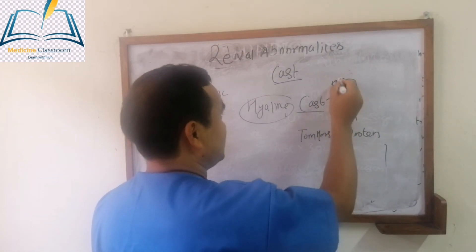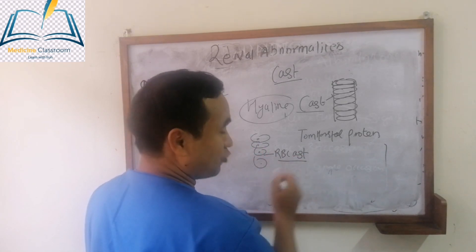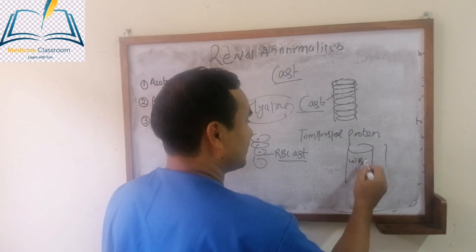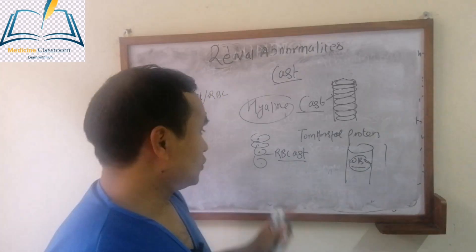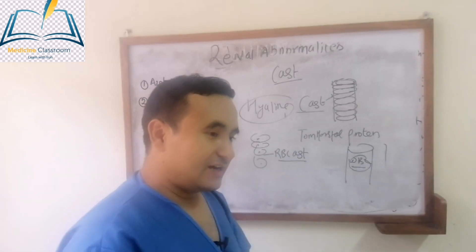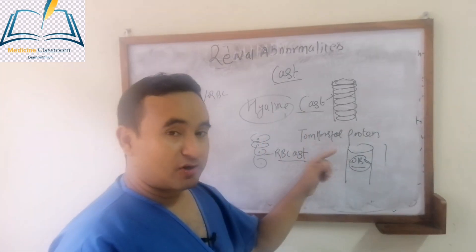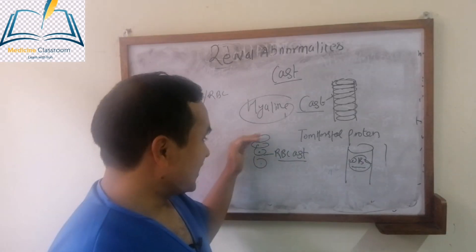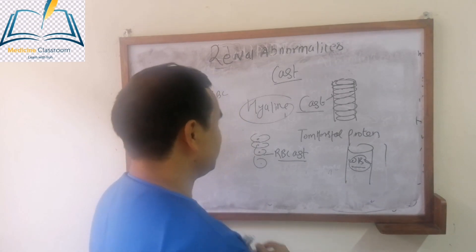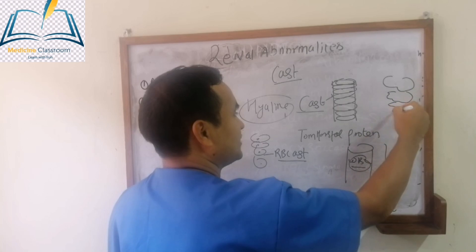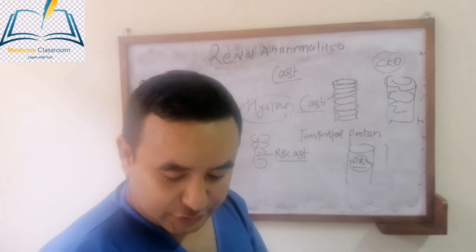If within this cast you see RBC, that is called an RBC cast, seen in different glomerular diseases. If you see WBC within the cast, that is called a WBC cast, usually indicative of infections like pyelonephritis. Sometimes in the case of CKD — this is an MCQ question — you can see a broad cast. Broad cast is seen in CKD.